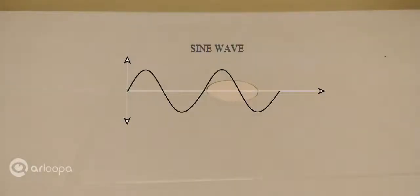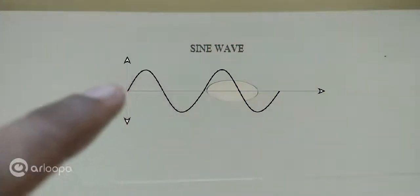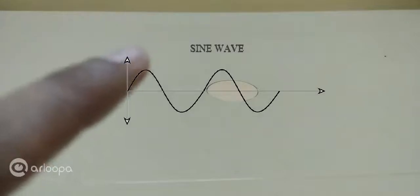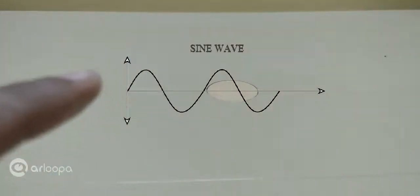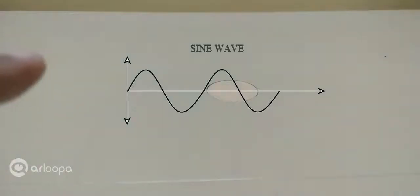The sine wave is important in physics because it retains its wave shape when added to another sine wave of the same frequency or arbitrary phase and magnitude. So what does that mean? It means that if I take this sine wave and add another sine wave of same frequency, the amplitude is going to increase or decrease depending on the phase, but the shape remains the same. In fact, it is the only periodic waveform to exhibit that property.